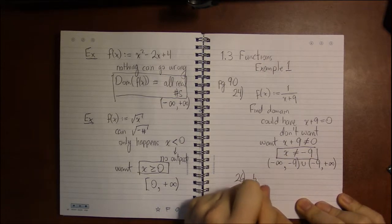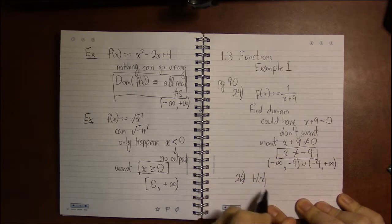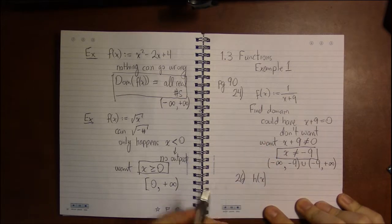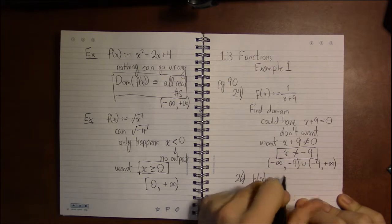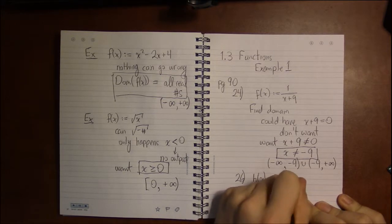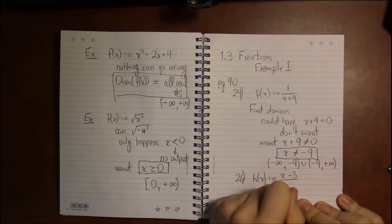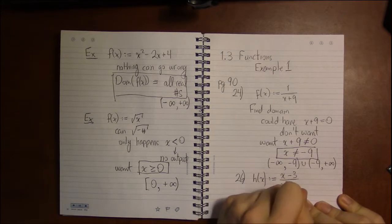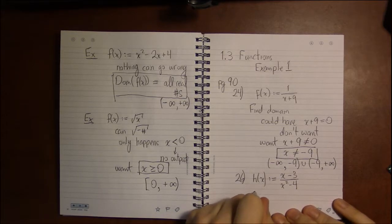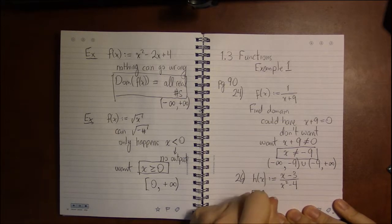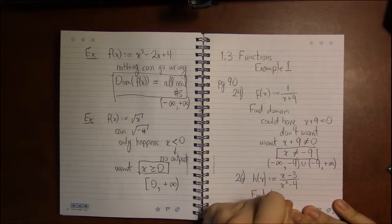All right so let's look at 26. Here we have h of x - that's all right, it's just a different letter, a different name for this function. We have x minus 3 over x squared minus 4. So we need to again find the domain of this function.